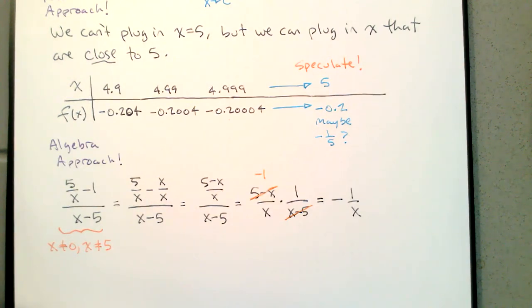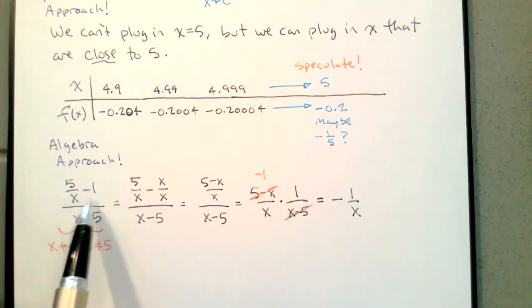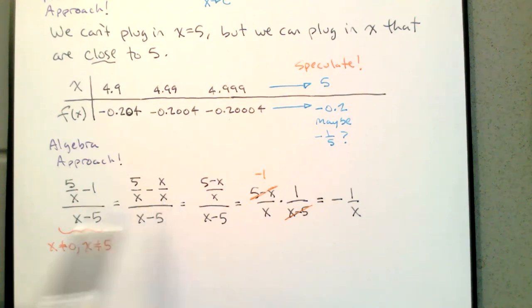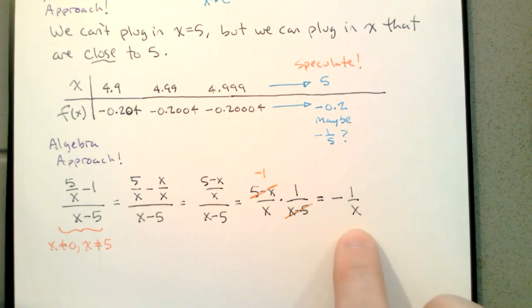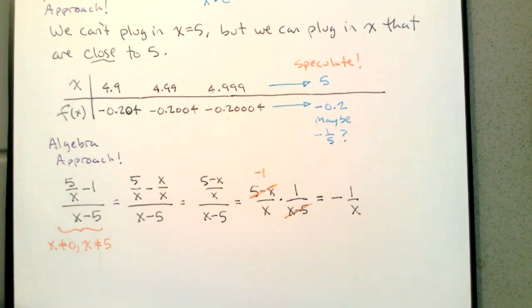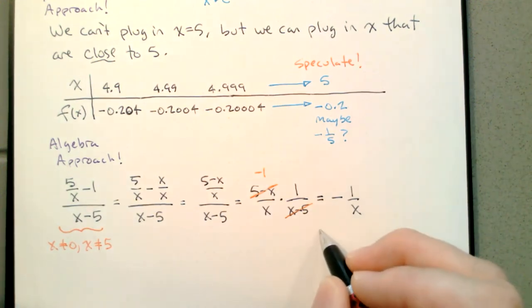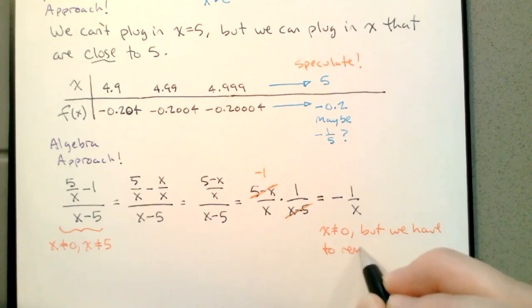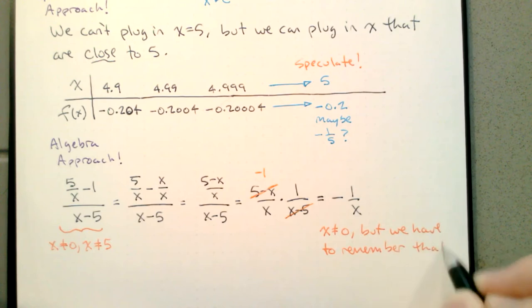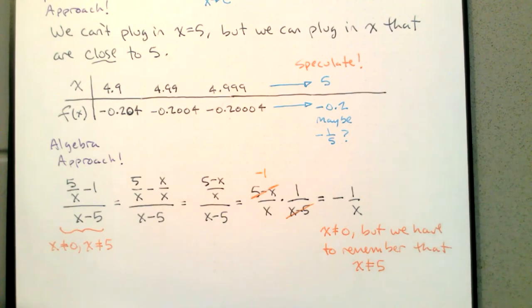Student: How did you get 5/x minus x/x? I'm just trying to add these two fractions — 5/x — by getting a common denominator, so I wrote 1 as x/x. One is not equal to x/x when x = 0, but x can't be zero in this problem. Over here we can still see x can't be zero, but we've lost the piece of information that x can't be five. So the original function equals −1/x, but only when x is not five.